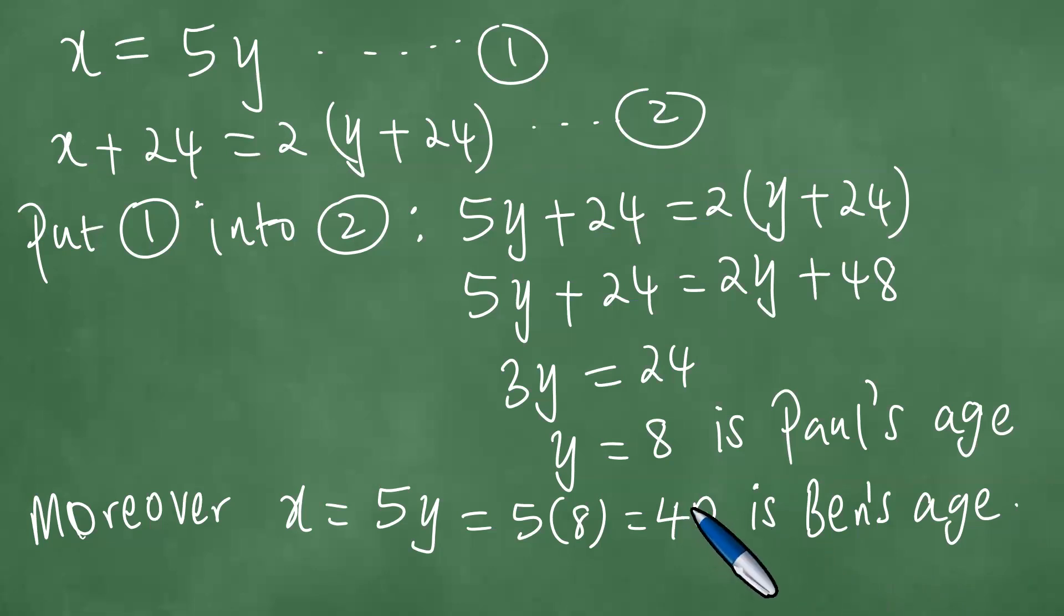So, this question is supposed to find Paul's age, and therefore, we know that Paul is eight and Ben is 40. These are the ages of the two people. So in other words, you can continue to say: